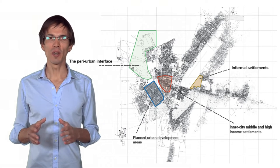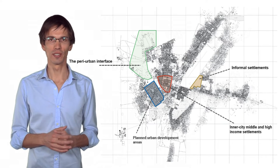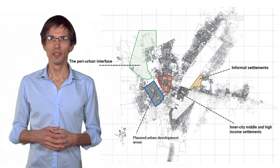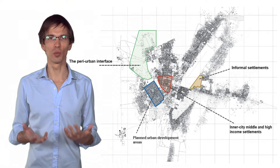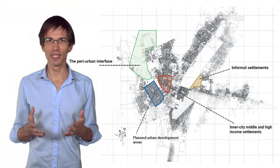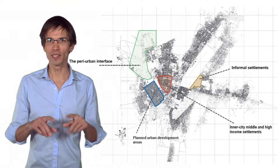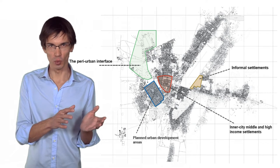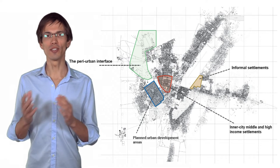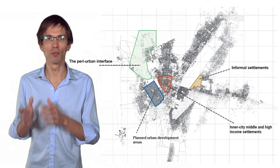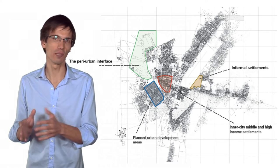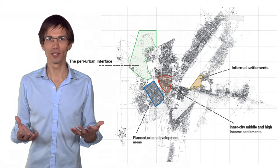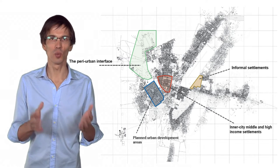Each context may require different sanitation solutions. Often, when you arrive in a city, the city centre is served by a sewer network. The main question is then what to do with the areas surrounding the city centre. Shall we try to connect them to the sewer network, or shall we keep on-site sanitation systems and plan for proper faecal sludge management? Or maybe you would prefer other alternatives, such as decentralized sewer systems.